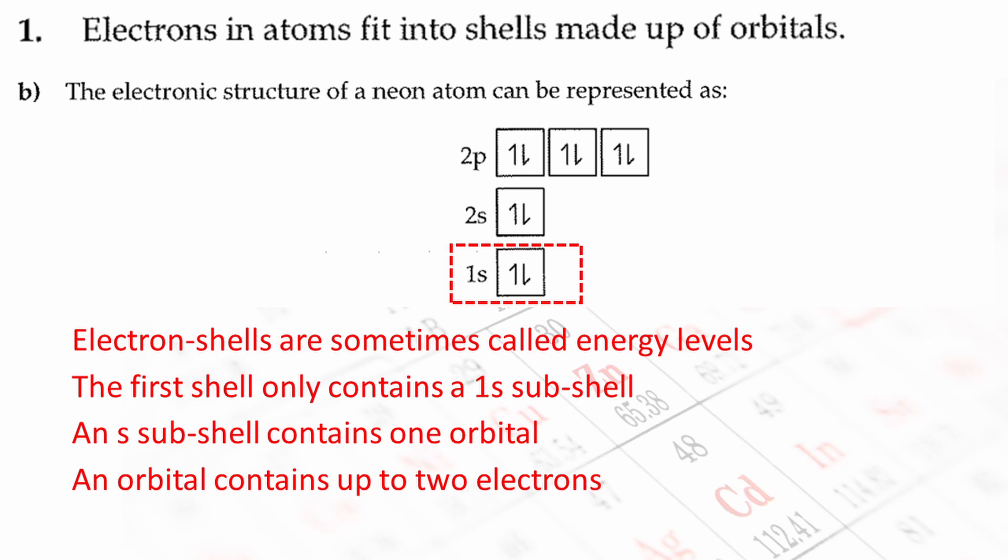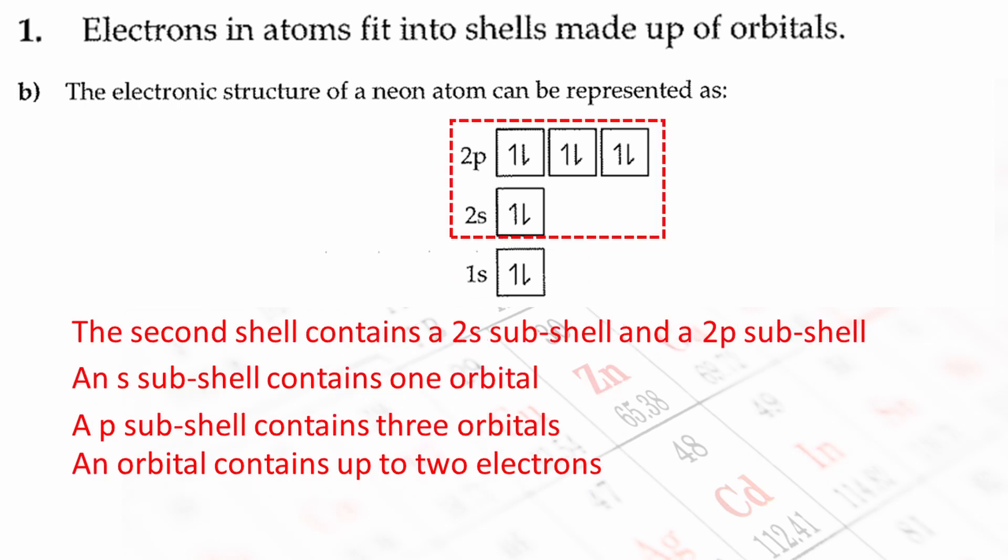The electron configuration, or the electron structure, of a neon atom is represented here using box notation. I have put a dotted line around the first energy level. The first shell, or energy level, only contains a one S subshell. An S subshell contains one orbital. An orbital contains up to two electrons, as stated previously. I have put a dotted line around the second shell here. The second energy level contains a 2S subshell and a 2P subshell. An S subshell contains one orbital. A P subshell contains three orbitals. So a total of eight electrons will fit in the second shell.